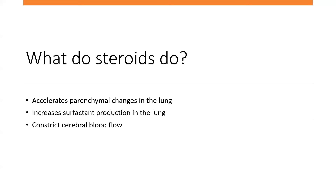What do antenatal corticosteroids do? They accelerate parenchymal changes in the lungs, meaning babies who are preterm and receive antenatal corticosteroids would have lungs that look like lungs of older babies under the microscope — they advance lung development. They also increase surfactant production. They decrease the risk of intraventricular hemorrhage, which is a significant cause of neonatal morbidity and mortality for preterm babies, and they do that by constricting cerebral blood flow — which we'll come back to when discussing theoretical risks.